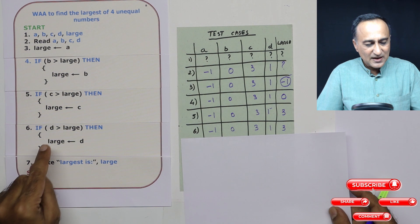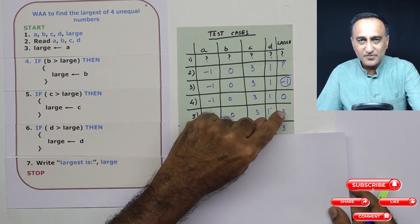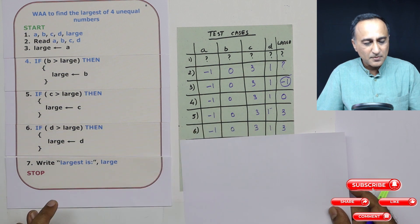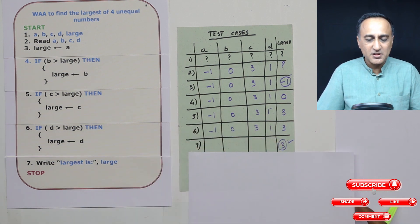In step number six, I am comparing D with large. Is one bigger than three? That is false, so large remains still as three. And in the last step, I am going to print three.